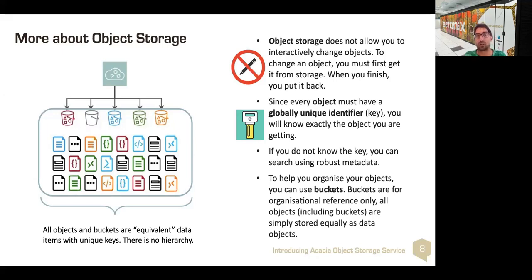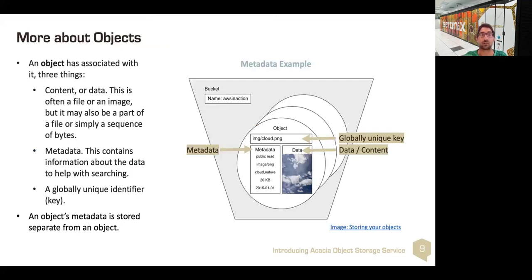A bucket is the highest level of organization you can have, and everything else is an object inside that bucket — there's no hierarchy. An object has three associated things: content and data (often a file, an image, or anything else), metadata (which contains information about the data to help you search — you can have more than just a file name, such as when it was created or who created it), and a globally unique identifier. You cannot have an object with the same name as another object; it must be globally unique. An object's metadata is stored separately from the object, allowing access to metadata without retrieving the entire object.